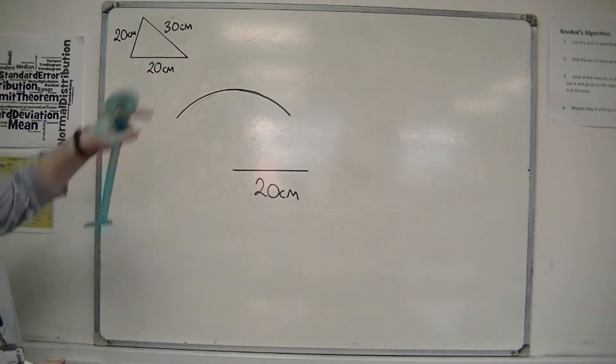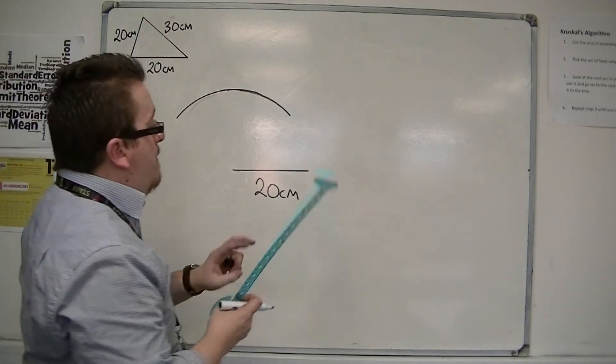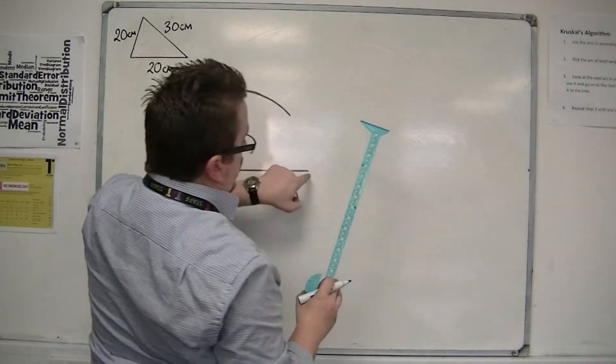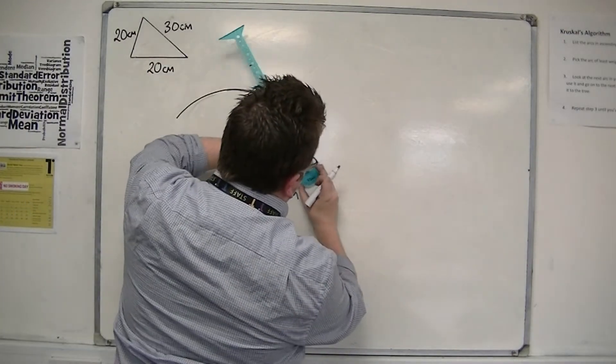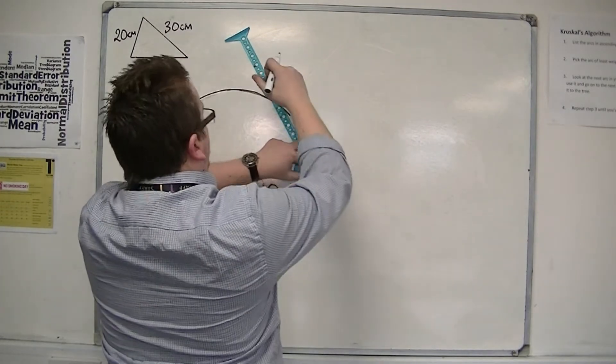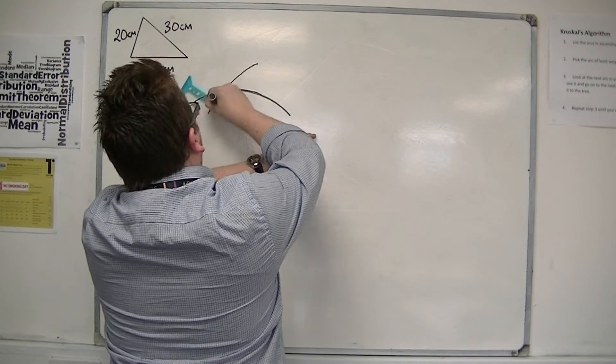Now I want 30 centimeters, so I measure my compasses out to 30 centimeters and put the sharp point on the right-hand corner. And then draw an arc.